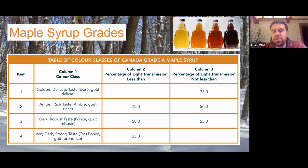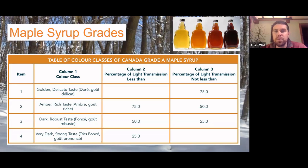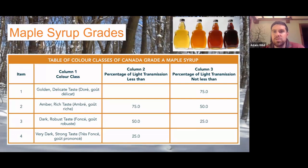The reason we use different grades is that it's helpful for the consumer. If you're used to a really light golden syrup and then you buy a dark or very dark syrup just labeled as 'maple syrup,' you're going to be confused and probably not happy. These differences can be quite drastic between flavor profiles. By grading them to color classes, it's helpful for consumers, though it does take some education because they don't always know the difference.